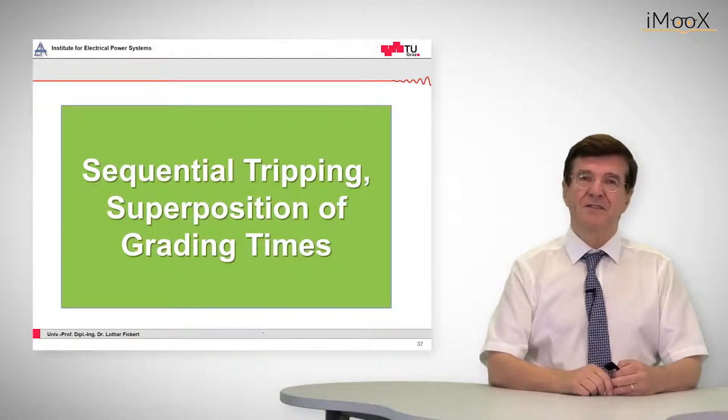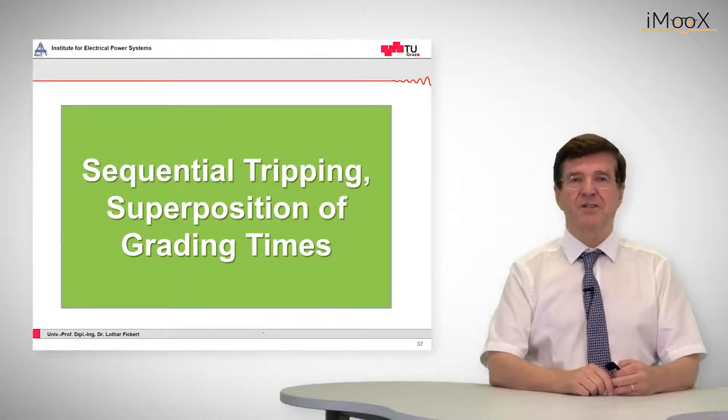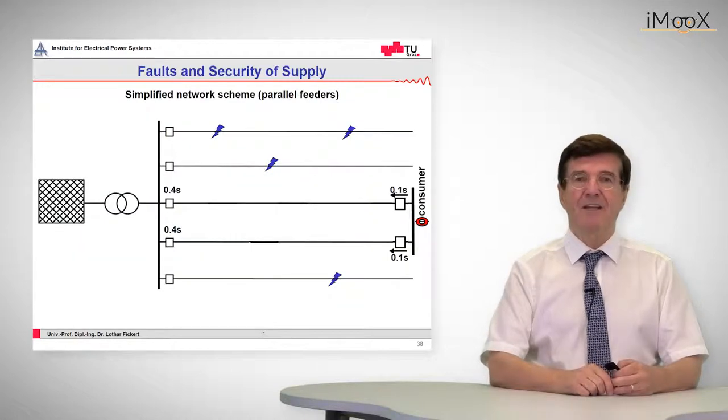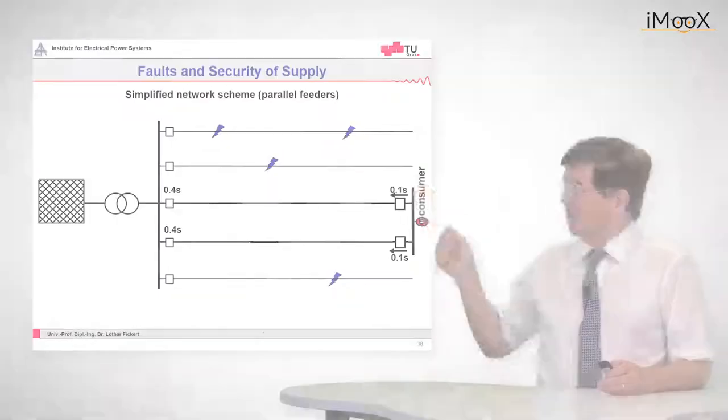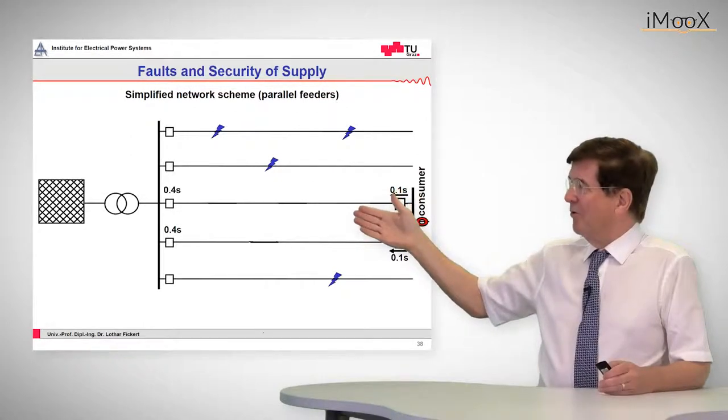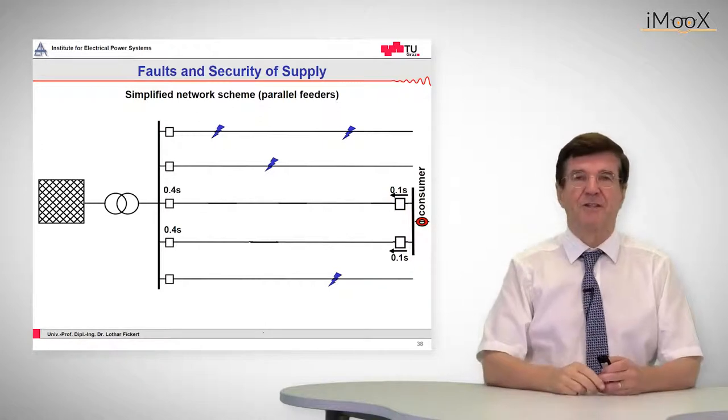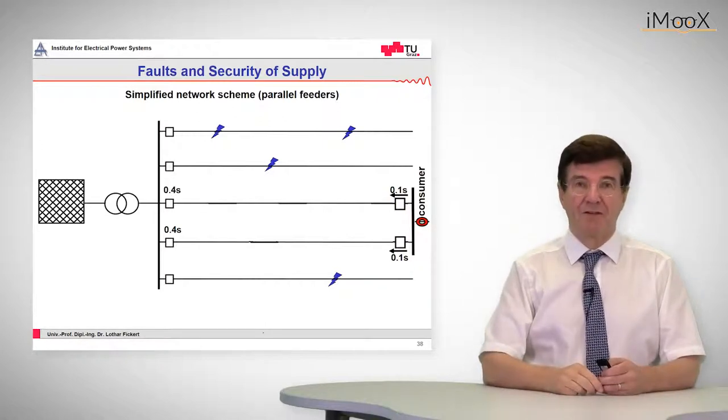The last section of today's lecture is about sequential tripping and the superposition of grading times. This may happen if we have parallel feeders. So as we can see here, the network is made up of two feeding lines for our sensitive consumer. That means, as was shown in a previous lecture, if one feeder fails, then the other one will sustain the electricity supply.